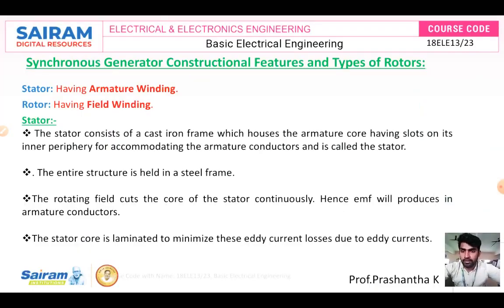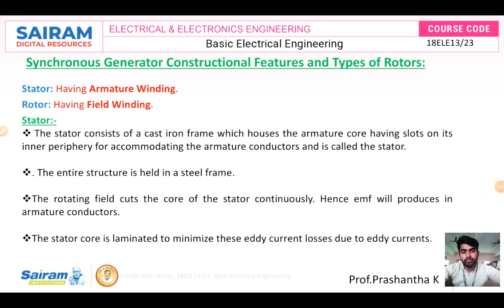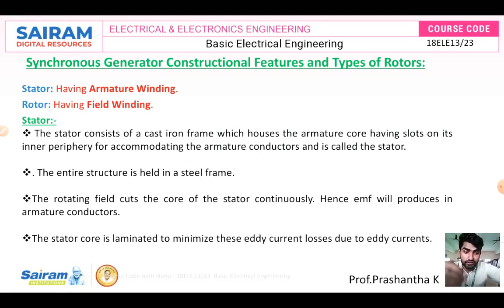Now, one by one, we will discuss concepts like stator, rotor, and field winding. Synchronous generator construction features and types of rotor: the stator is the stationary part of the machine, and the rotor is the rotating part. The rotor has field winding, but the stator has armature winding or armature conductors — because they generate more voltage, more power, and more current. That's why armature conductors are kept stationary.